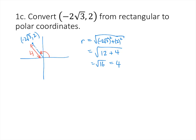Now for the angle — since this point is in quadrant 2, we need to be careful. I'll draw a triangle: the hypotenuse is 4, the horizontal distance is 2√3, and the vertical distance is 2. This triangle is a 4× scaled 30-60-90 right triangle, so the angle at the origin inside the triangle is pi over 6 (30 degrees). Since that reference angle is pi over 6, the actual angle for the point is 5pi over 6. So the polar coordinates are (4, 5π/6).